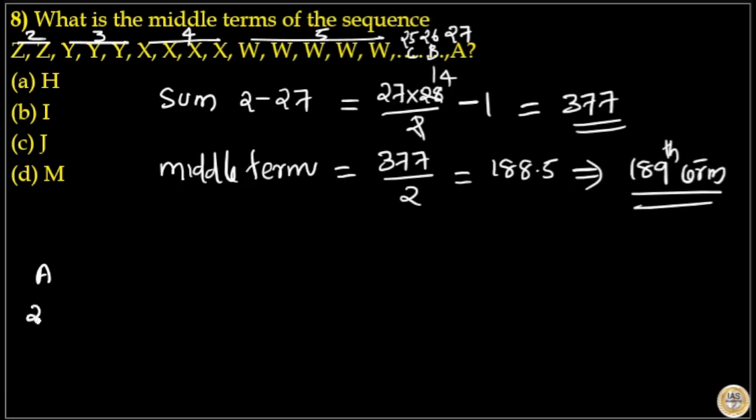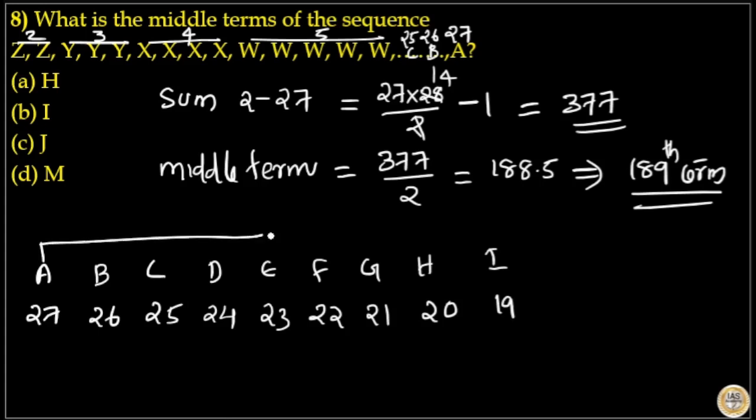A repeats 27 times, B repeats 26 times, C repeats 25 times, D repeats 24 times, E repeats 23 times, F repeats 22 times, G repeats 21 times, H repeats 20 times, and I repeats 19 times. Here you can see A to H terms.